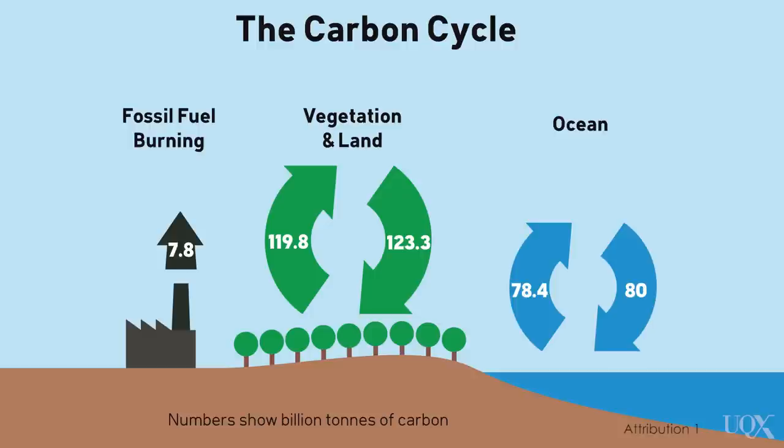So nature emits large amounts of CO2, but it also absorbs large amounts of CO2. They almost match but not quite. The result is the natural environment is a net carbon sink. It removes about 6 billion tonnes of carbon dioxide each year from the atmosphere.